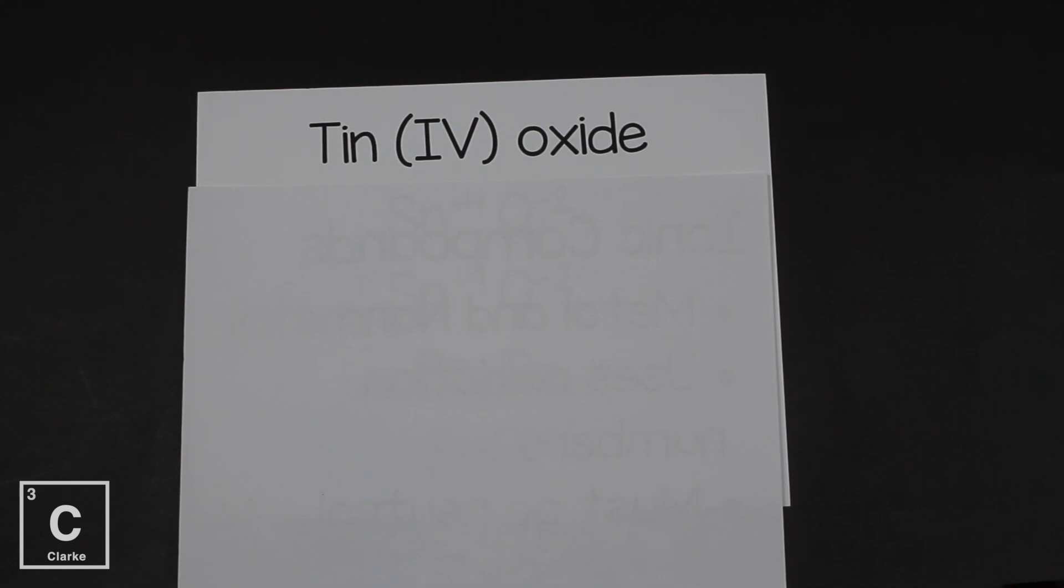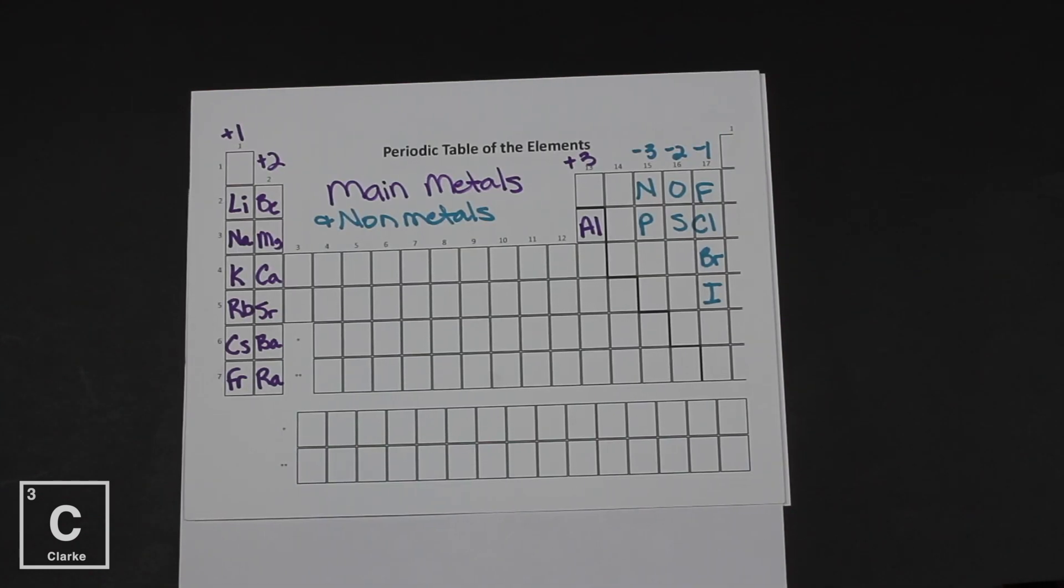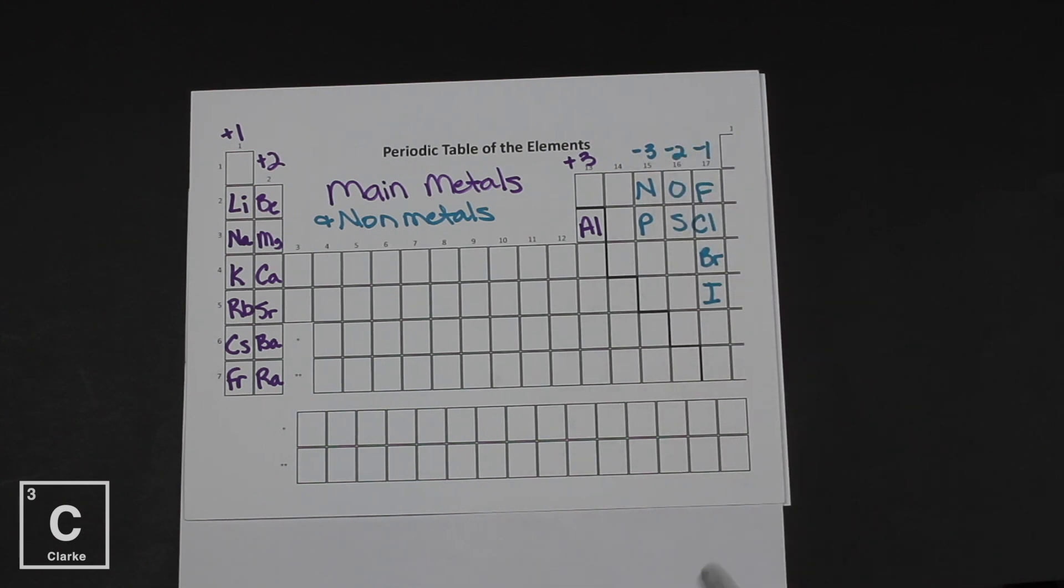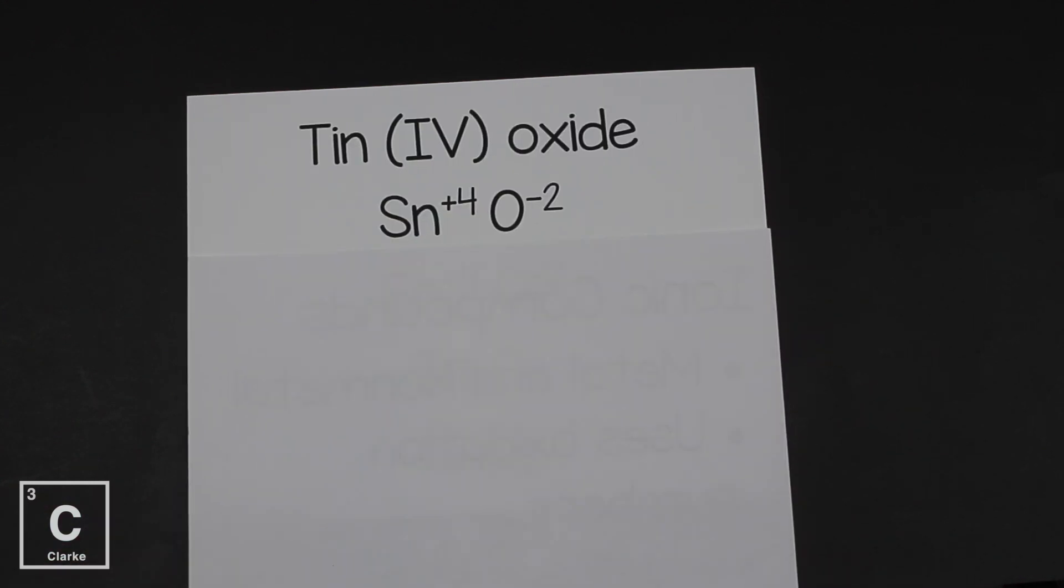Let's try another example with a transition metal. Tin roman numeral four oxide. Tin, four oxide. That means tin has an oxidation number of four. Oxide, that's just oxygen. Oxygen's in group 16. It has an oxidation number of negative two. So we have Sn plus four, oxygen negative two. We're going to crisscross those numbers down just like before.